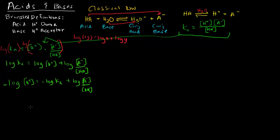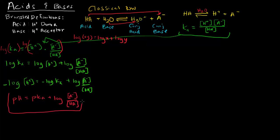Recalling from general chemistry, the negative log of [H+] is defined as pH and the negative log of Ka is defined as pKa. Rewriting the equation, we get pH = pKa + log([A-]/[HA]). This equation is the Henderson-Hasselbalch equation.